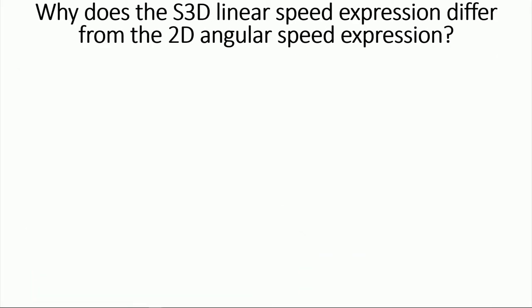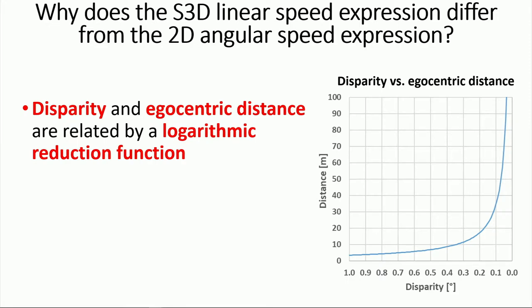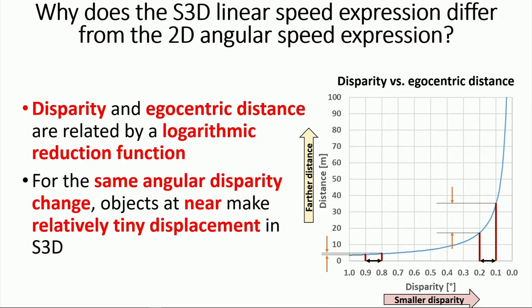Why did this happen? It is because the angular disparity and egocentric distance are related by a logarithmic reduction function, as shown in the plot. Farther distance has smaller angular disparity, and for the same angular disparity change, the objects at farther distance make larger displacement compared to the near objects. When this logarithmic reduction function is combined with the linear perspective function, they will compensate each other, and make all approaching objects to be perceived at similar speed.